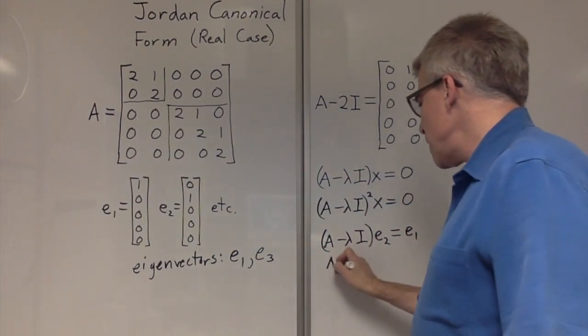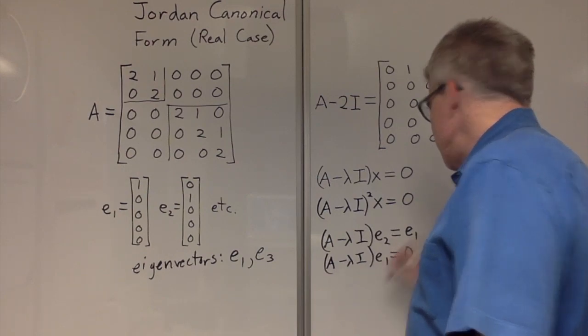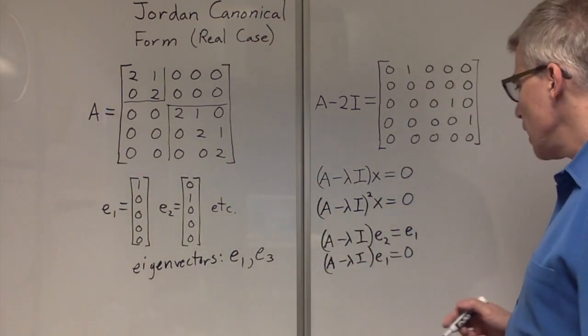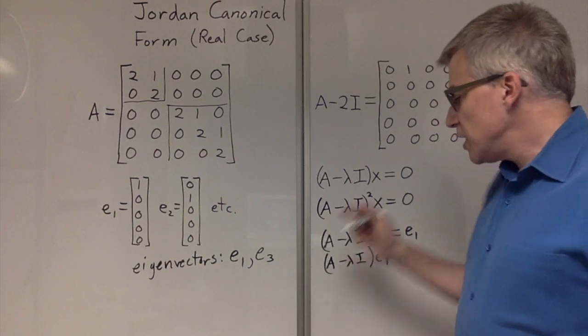And then A minus lambda I acting on E1 gives 0 because E1 is an eigenvector. Can we find another generalized eigenvector that chains off of that?